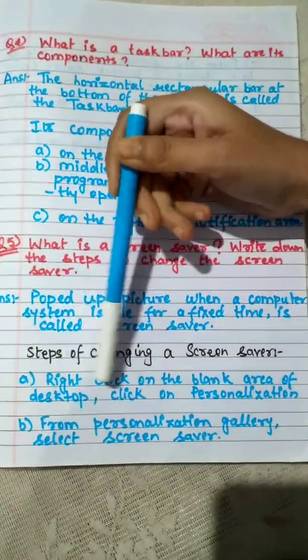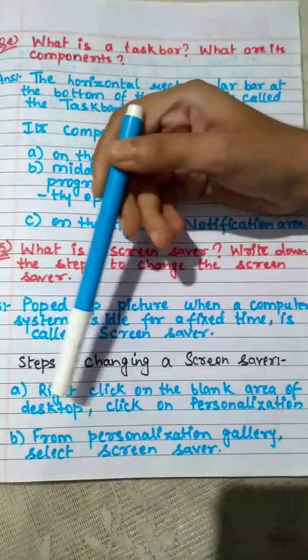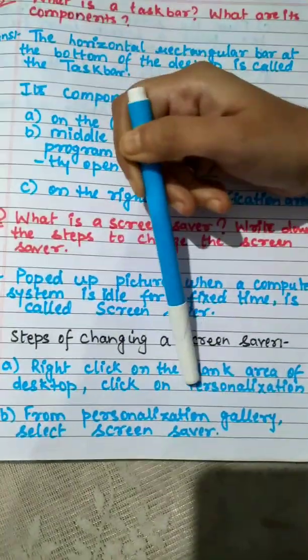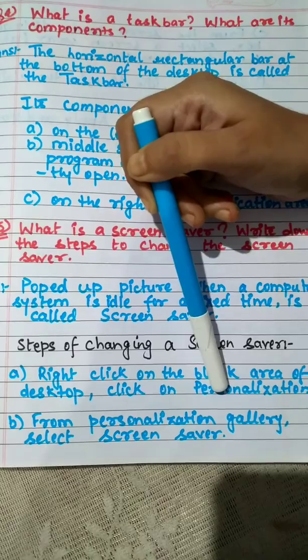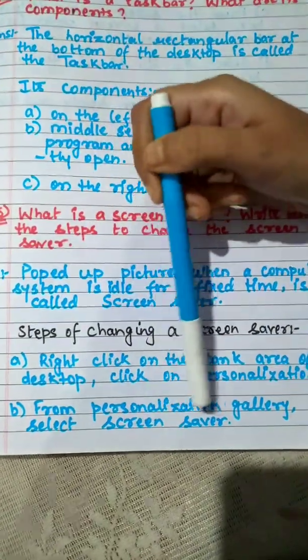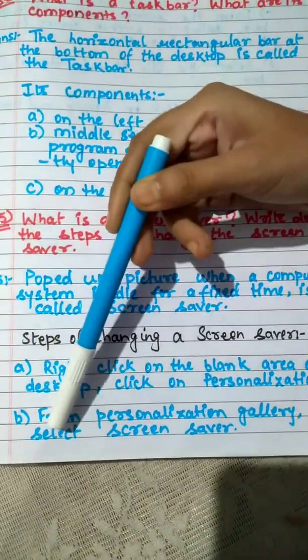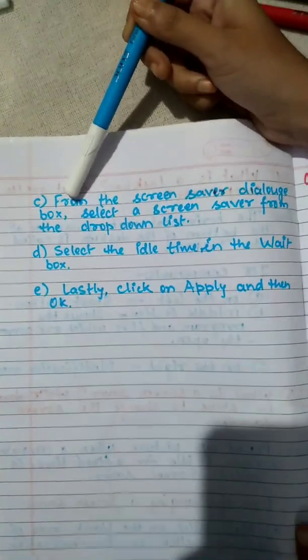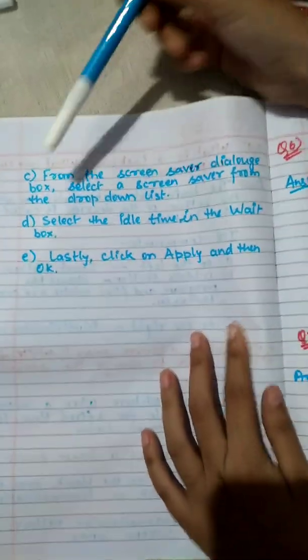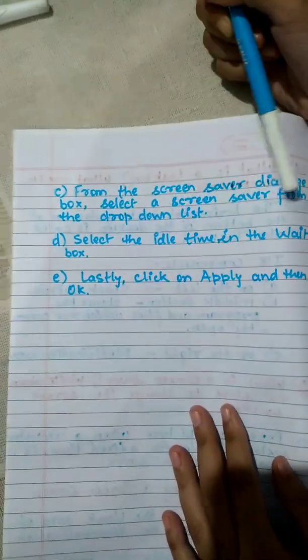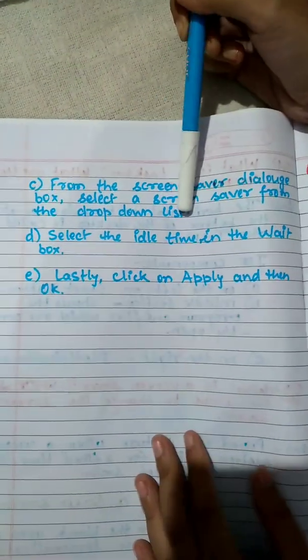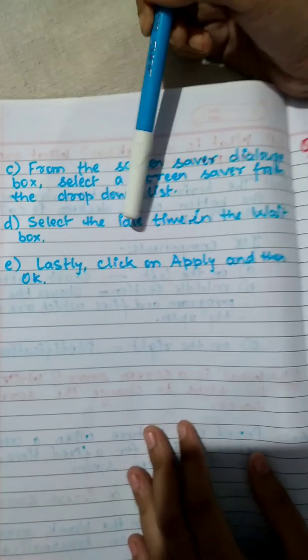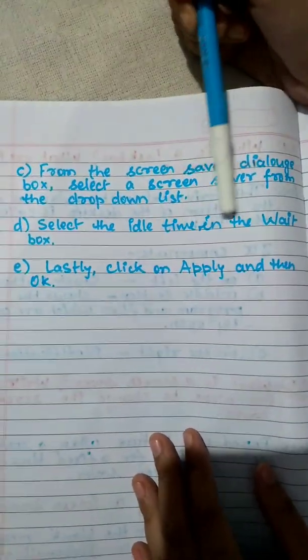First, right click on the blank area of the desktop, then a personalization option will appear. From the personalization gallery you have to select the screensaver. Next, from the screensaver dialog box, select a screensaver from the drop down list. Next, you have to select the idle time in the wait box.